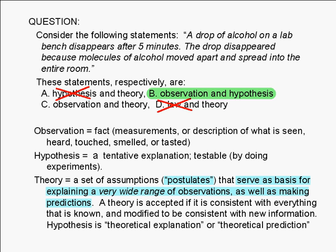You may have heard of a hypothesis being defined as an educated guess. It is educated because it has to be based on prior knowledge. A good hypothesis should be based on accepted theory. You can say that a hypothesis is a theoretical explanation or a theoretical prediction, but it's not the theory itself. In this question, the hypothesis given is based on the atomic theory, which consists of ideas about matter being made up of atoms and molecules and how these atoms and molecules behave.